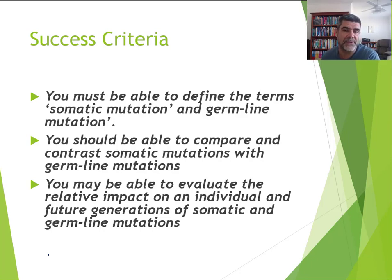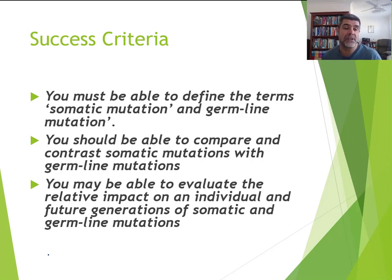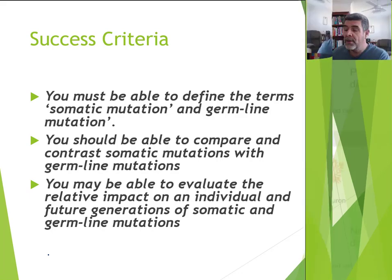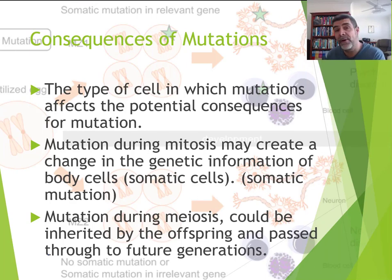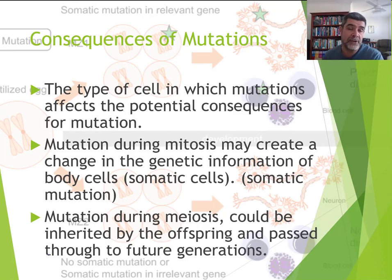Now we're up to the consequences. One of the first ways we can look at consequences is to identify the difference between somatic mutations and germline mutations — to compare and contrast these, and then to evaluate the relative impact on the individual within the generation and potentially future generations. One of the first things we have to do when evaluating the consequences of mutations is to look at the types of cells in which the mutation has occurred.